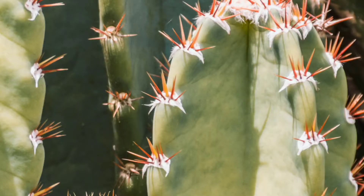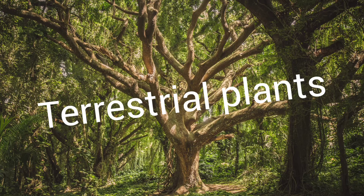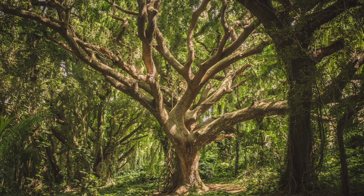Plants growing in different areas have different features depending on the place where they grow. Plants can be categorized into two groups: terrestrial plants and aquatic plants. The word terrestrial means living on land, so the plants growing on land are called terrestrial plants. Land is not the same everywhere — climate and soil also differ from one place to another.